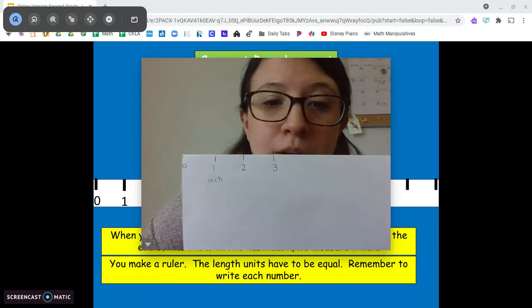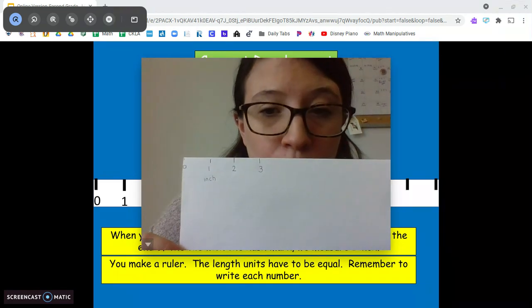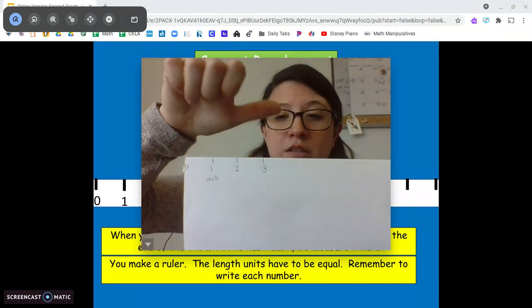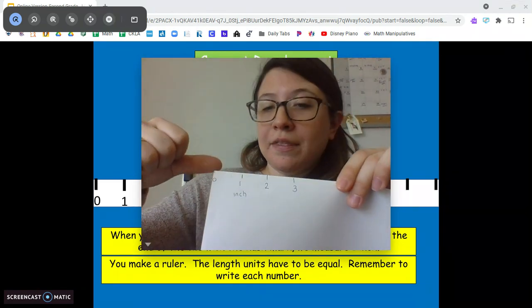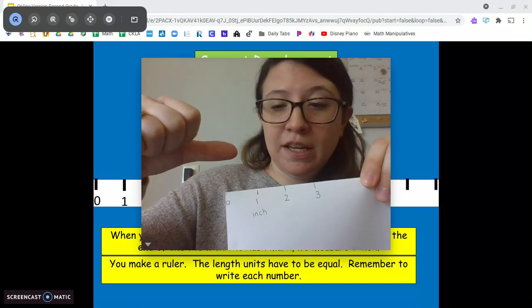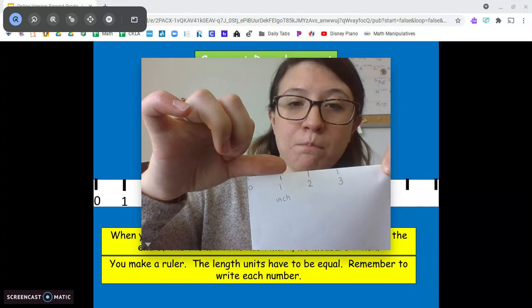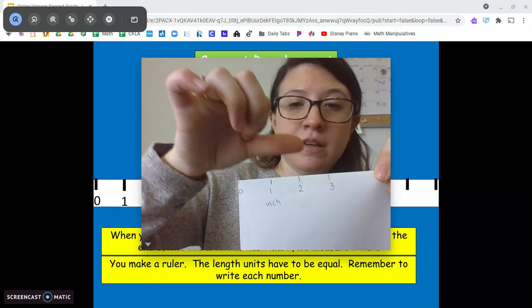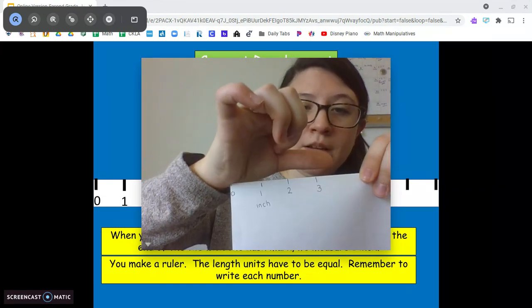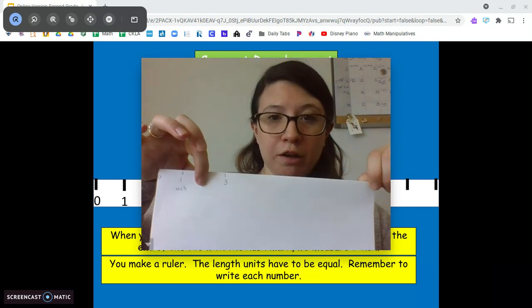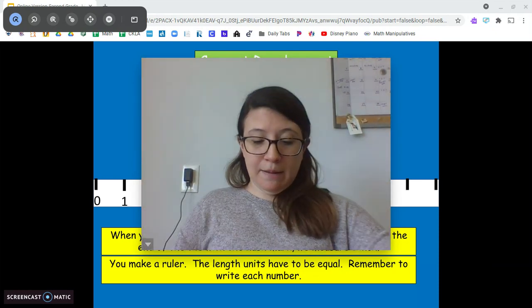What I want you to do is pause and make your own ruler. You're going to start at the very end. That's going to be your zero. Take the knuckle of your thumb, line it up, put a mark where your thumb ends, line it up, and keep going all the way across your paper. All right. I'm going to do the same.